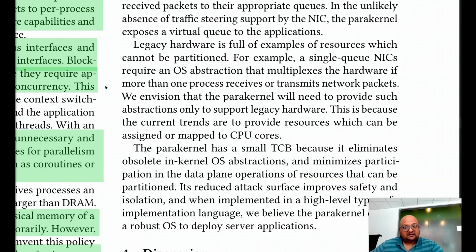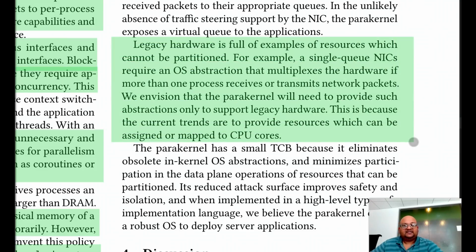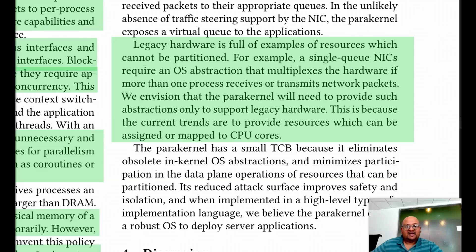If the underlying hardware supports secure partitioning and you can give each process its own secure partition, that's all well and good. But with legacy hardware, we still have cases where resources can't be partitioned — for example, old network interface cards which don't have multiple queues and just have a single transmit-receive queue. In that case, the OS still has to multiplex one resource over a number of processes. The authors think this kind of hardware will begin to die out, and the para-kernel will need to provide multiplexing only to support such legacy hardware.